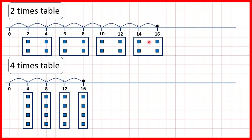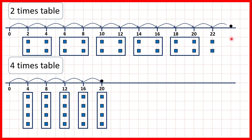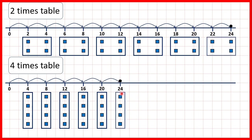We've got 4 more counters up here, and with our 4 times table we have 4 more counters here as well. Continuing, 18 and then 20: 10 times 2 is 20, and 5 times 4 is also 20 — again, another 4 counters in both. Then 22 and 24: 12 times 2 is 24, and 6 times 4 is also 24. If we carry on with our 4 times table, next we have 28, and if we were to continue counting in 2's past 24, we would also get to 28.